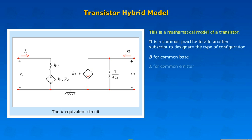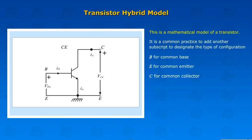B for common base, E for common emitter, C for common collector.